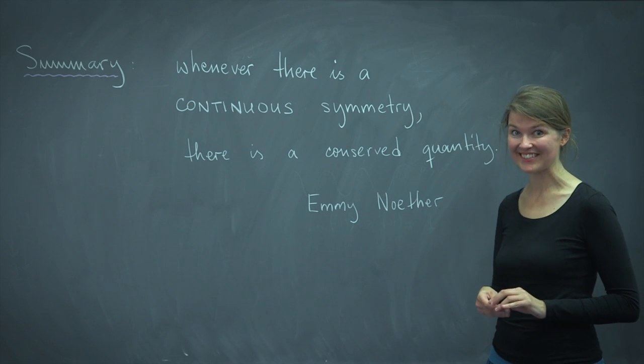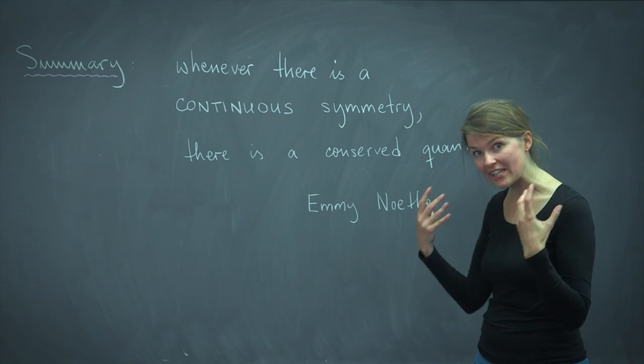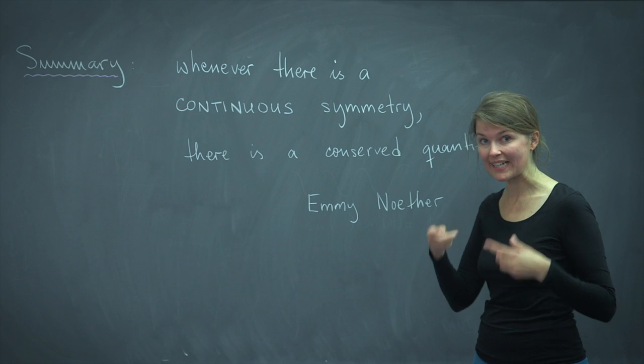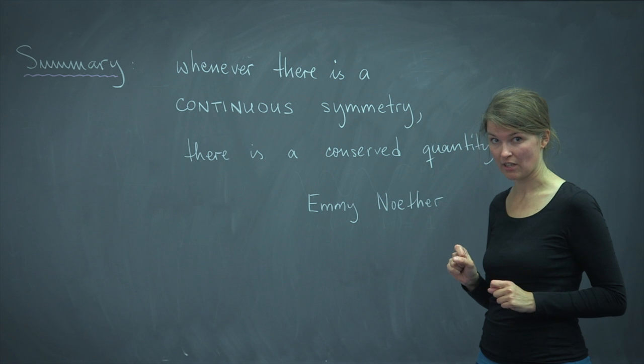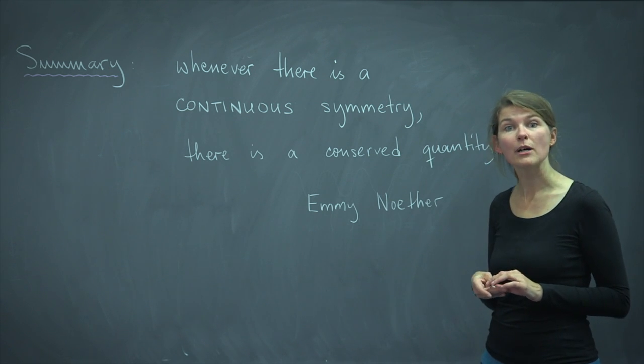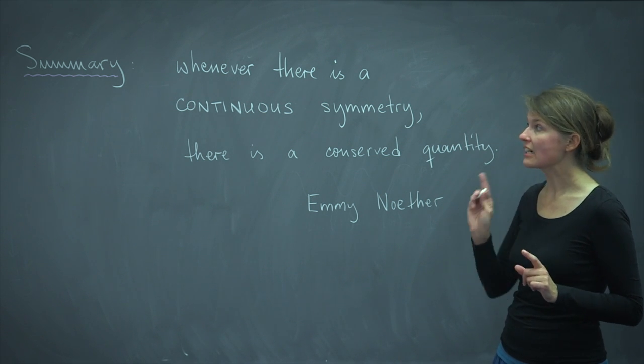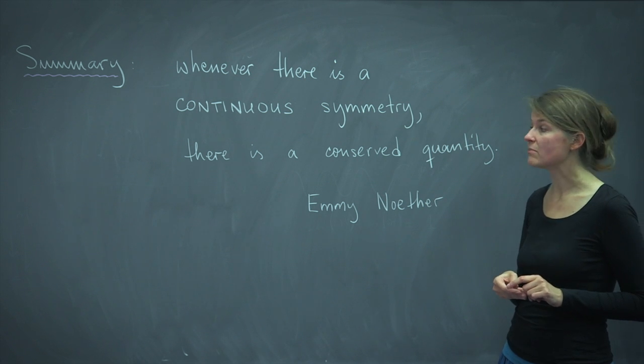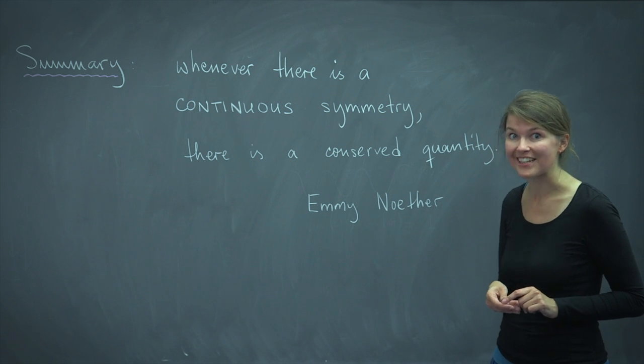To summarise what we've just seen. So if we have continuous translations in space, parallel translations in space, we get linear momentum conservation. If we have continuous rotations in space, we get angular momentum conservation. If we have time translations, we get energy conservation. And we can carry on. In fact, there is a beautiful mathematical theorem by Emmy Noether that states that whenever there is a continuous symmetry, there is a conserved quantity. That is probably my favourite theorem. It's a beautiful result, and hopefully you will hear much more about it in later lectures.